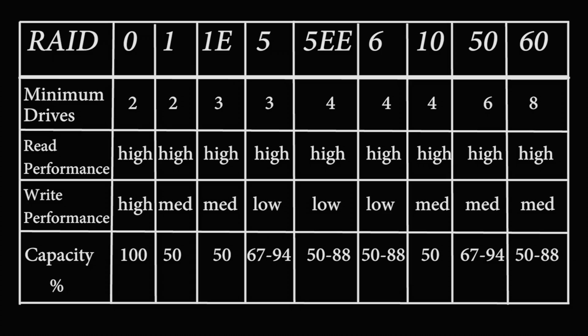There are a lot of different RAID options. It starts with numbers — RAID 0 all the way up to RAID 60. We've made a little chart for you to look at, and as you can see, there are a lot of different options: RAID 0, RAID 1, RAID 1E, RAID 5, RAID 5EE, RAID 6, RAID 10, RAID 50, and RAID 60.